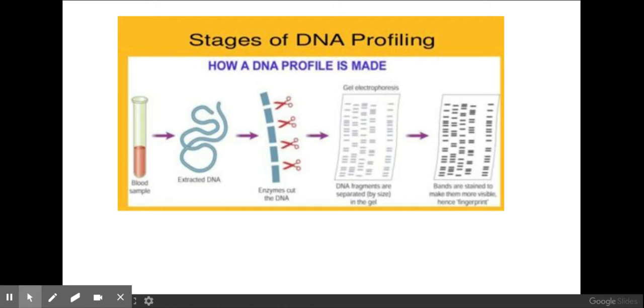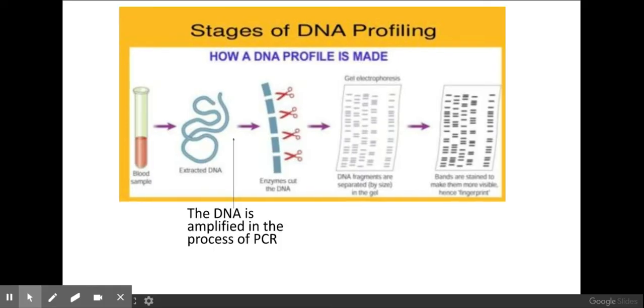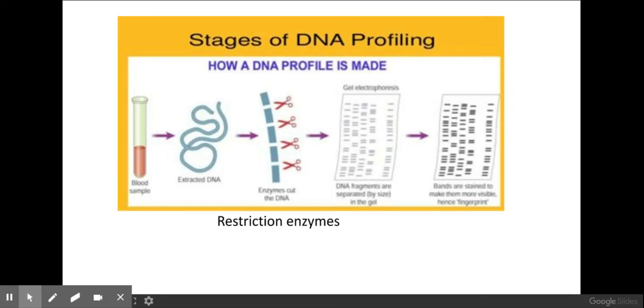So what we do to create a genetic or DNA profile is the first thing I need to do is take my sample of DNA and extract it. What I'm then going to do is amplify my DNA using the process of PCR which we had a look at in a previous video. What I'm then going to do after PCR is I'm going to cut my DNA using restriction enzymes which cut specific areas on the DNA.